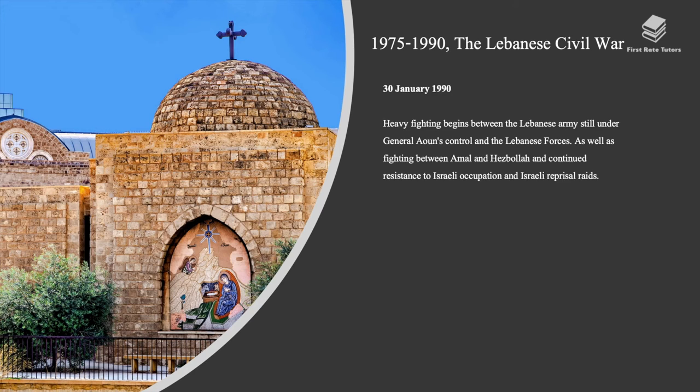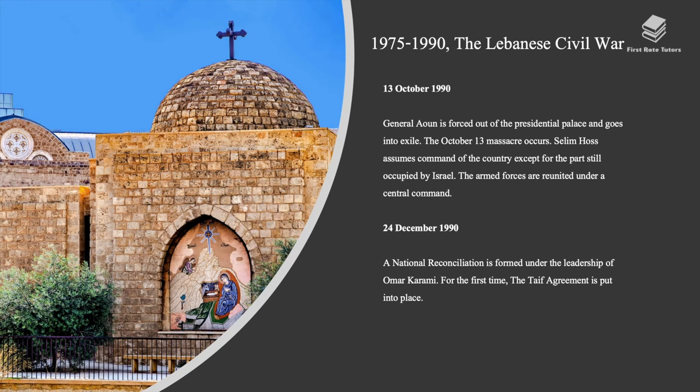In January 1990, heavy fighting began between the Lebanese army, still under General Aoun's control, and the Lebanese Forces, as well as fighting between Amal and Hezbollah, continued resistance to Israeli occupation, and Israeli reprisal raids. In October 1990, General Aoun was forced out of the presidential palace and went into exile. The October 13th massacre occurred. Selim Hoss assumed command of the country except for the part still occupied by Israel, and the armed forces were reunited under a central command.